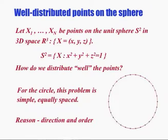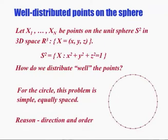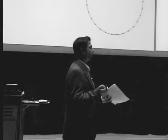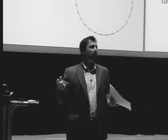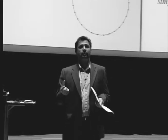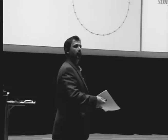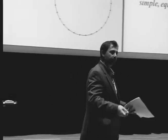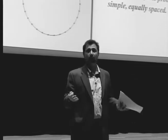Well-distributed points on the sphere — what exactly does that mean? First of all, what is the sphere? You have three coordinates: height, width, and length. When you square these coordinates and add them together, that should give you one. That's what the unit sphere in space is — the distance to the origin is one. How do we distribute points well? It's very easy for the circle: just measure the circumference 2πr, divide by n, walk that length around the circle and place a point. That's how you get equally and nicely distributed points on the circle.